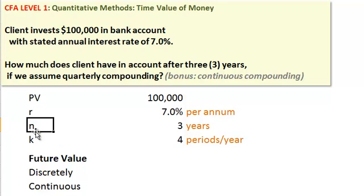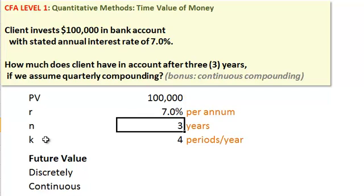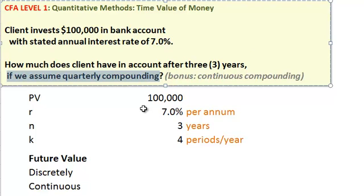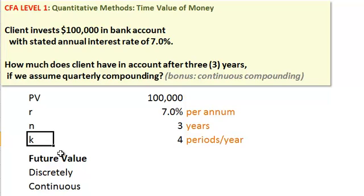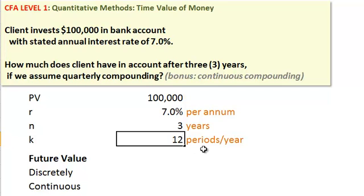N is the number of years, which also corresponds to the calculator keystroke — here we have three years. Now, here's one that trips up new learners sometimes: we absolutely need to know that the compounding is quarterly. We need the compound frequency because there are different answers based on it. K is the typical notation for compound frequency, or how many periods per year the money is compounding. Quarterly is 4; monthly would be 12; annual would be 1.